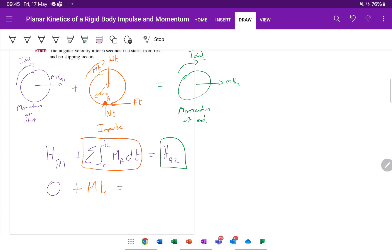At our end, we're going to have some rotation and some translation here, because it's going to be turning and it's going to be moving forwards. So we're going to have M, V, G, R plus I, G, omega, 2.